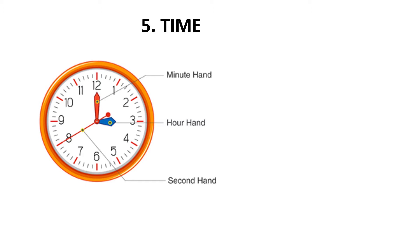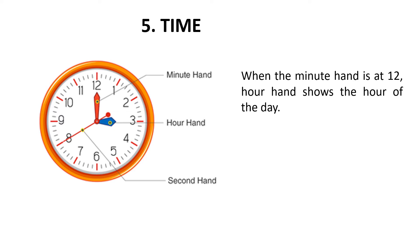Did you notice the small markings on the clock? There are 60 such markings, and each mark shows one minute. The minute hand takes one minute to move from one marking to the next. Can you say how many minutes the minute hand will take to move from one number to the next? Yes, it takes five minutes to move from one number to the very next number.